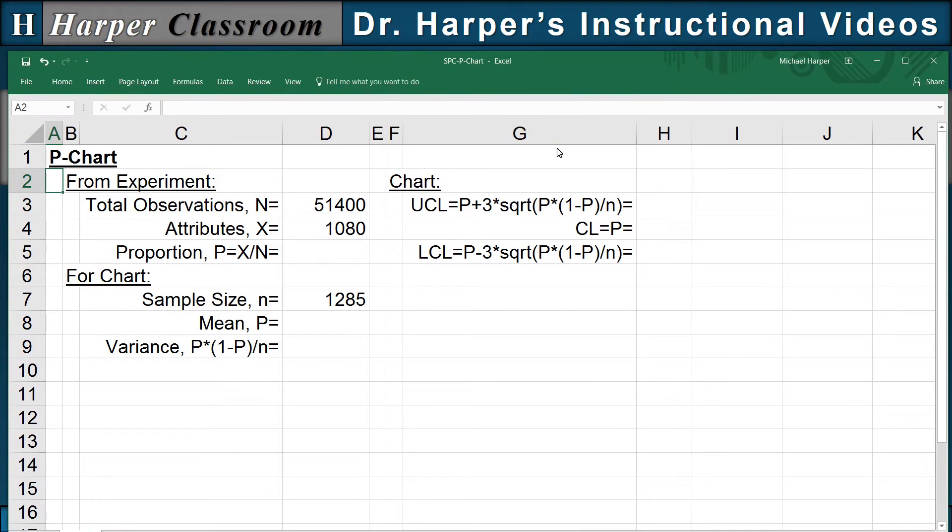I've already typed in the data from the experiment where the total observations, capital N, is 51,400. The number of attributes in the experiment, X, is 1,080. And the sample size for the chart, small n, is 1,285.